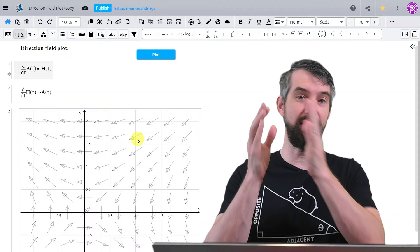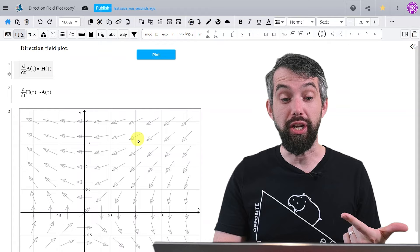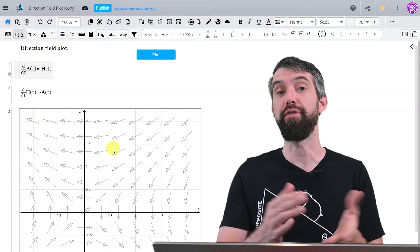So what a specific arrow says is that at this particular location, this amount of aliens, this amount of humans, how are things changing? And then this arrow, its horizontal and vertical components are given by these two different rates of change.